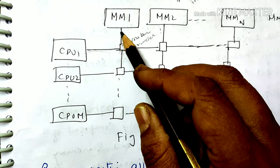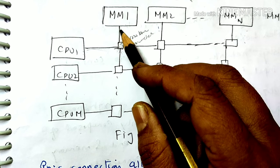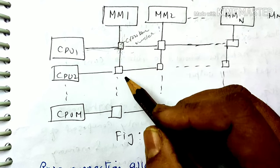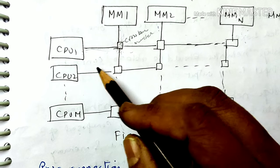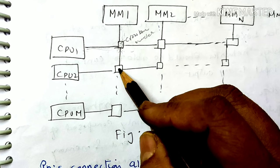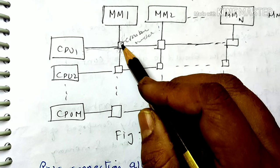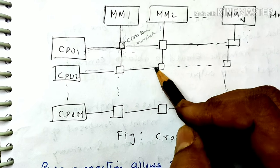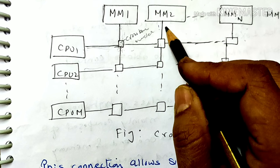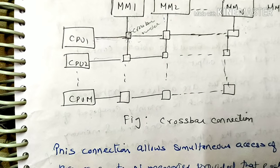The path from a CPU to a memory module is selected by the crossbar switch. For example, CPU2's path to connect to a memory module is also determined by the crossbar switch.